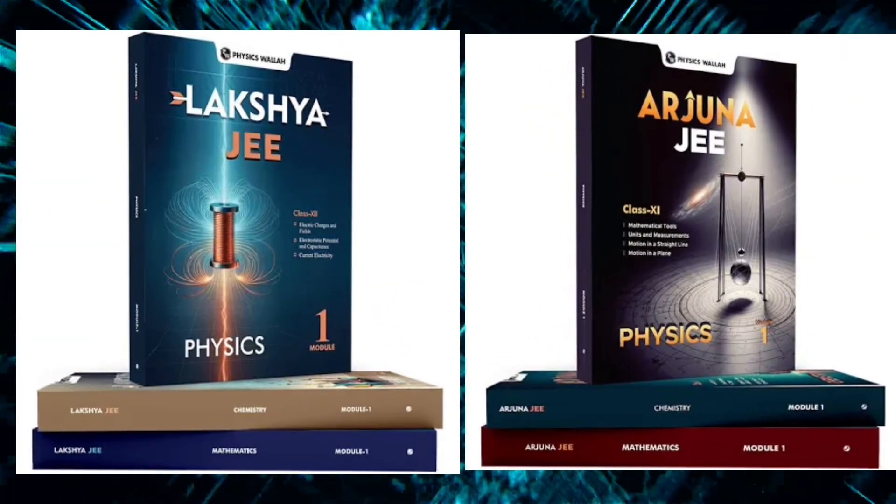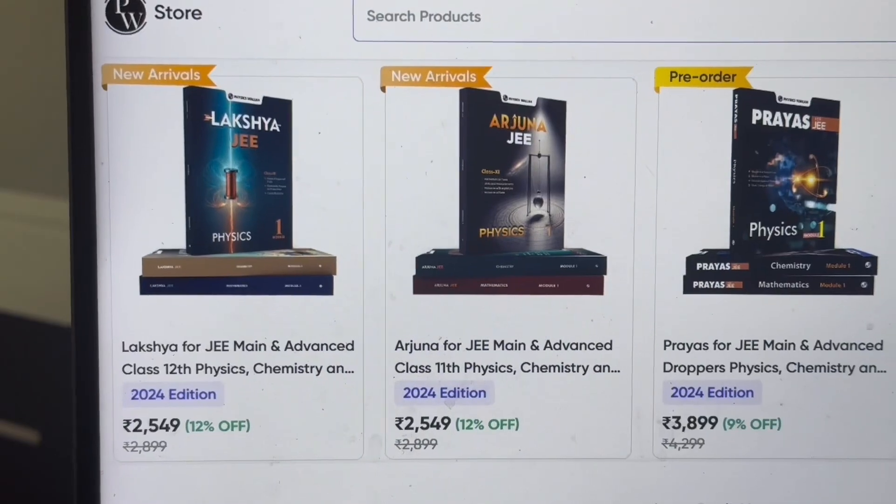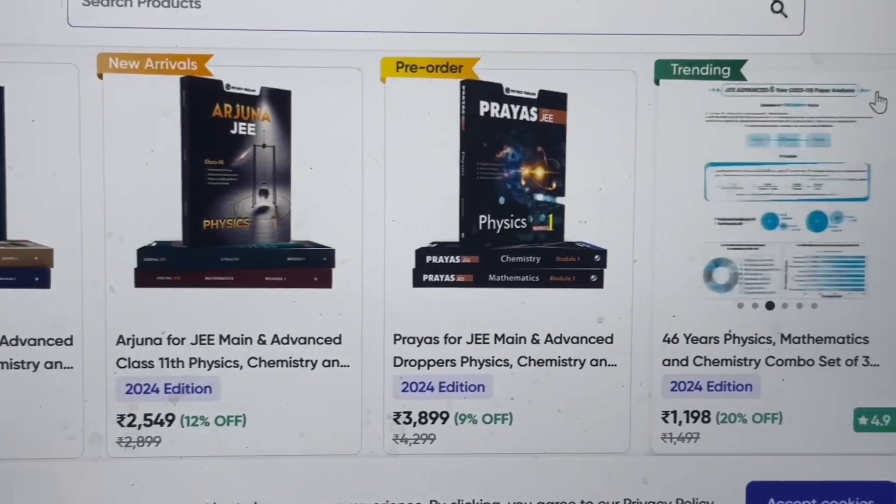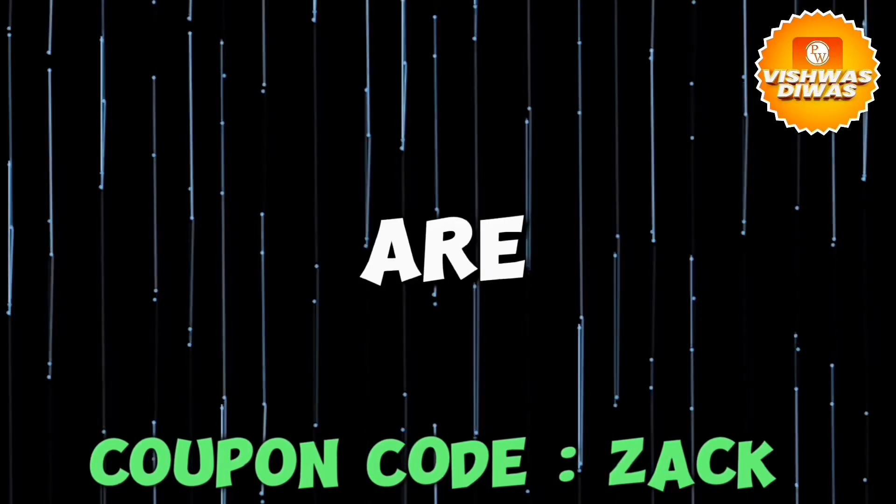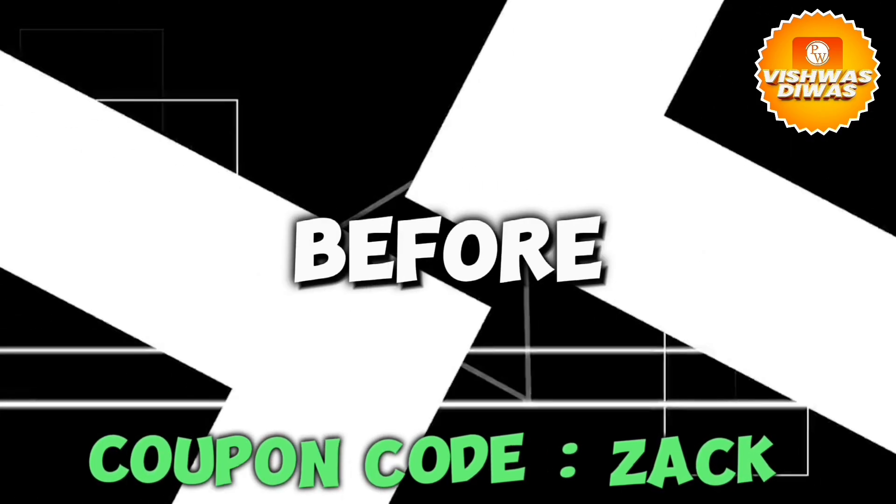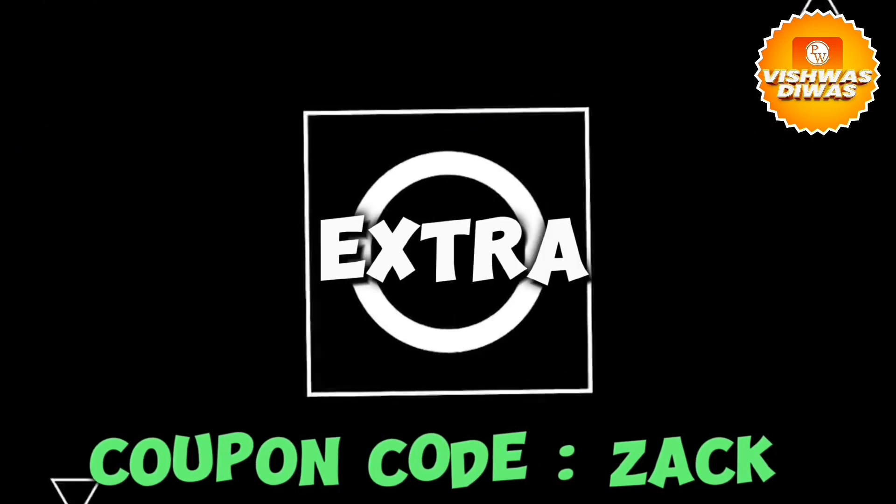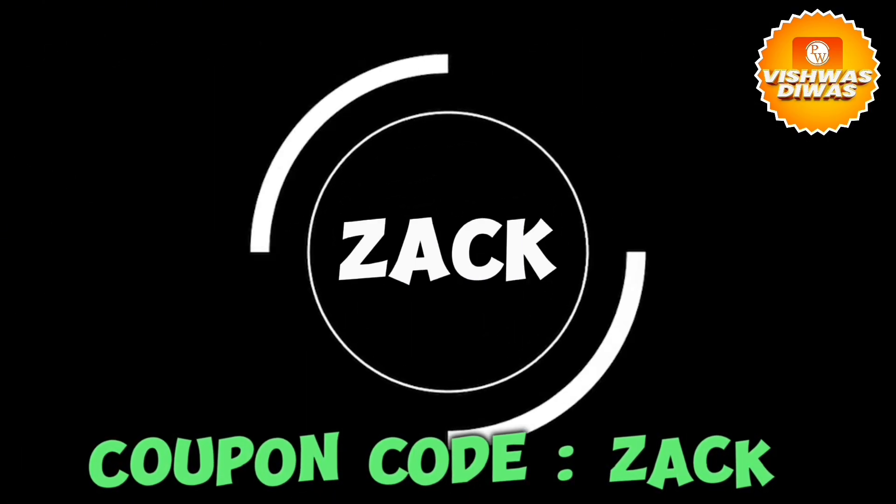And with these batches, you can also buy the modules which will boost your preparation. All these books are available in PW Store so you can check it out. So what are you waiting for? Buy the batches before the offer ends. And for extra discount, you can use my coupon code ZACK on PWAPP.